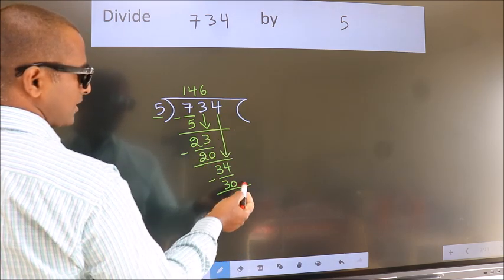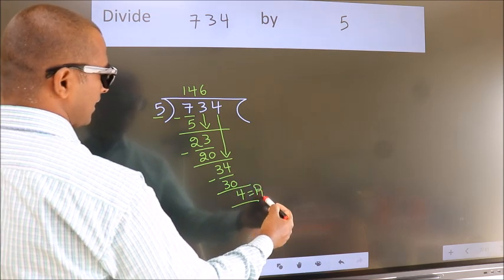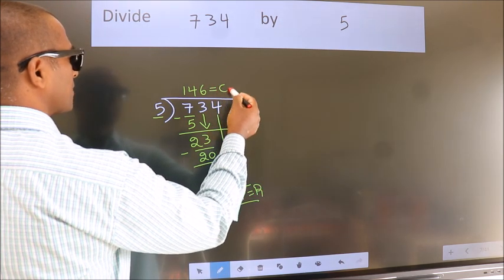No more numbers to bring down. So, we stop here. This is our remainder. This is our quotient.